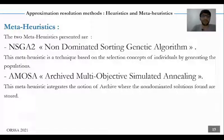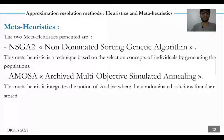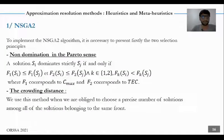We present here the meta-heuristics. The two meta-heuristics presented are NSGA2, non-dominated sorting genetic algorithm. This meta-heuristic is a technique based on selection concepts of individuals by generating populations. The second meta-heuristic is AMOZA, archived multi-objective simulated annealing. This meta-heuristic integrates the notion of an archive, where the non-dominated solutions found are stored. We present the first meta-heuristic, NSGA2.